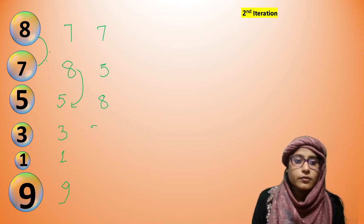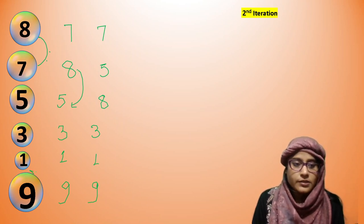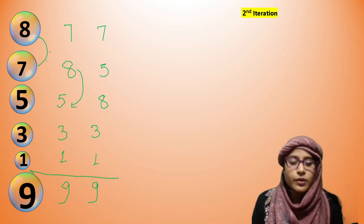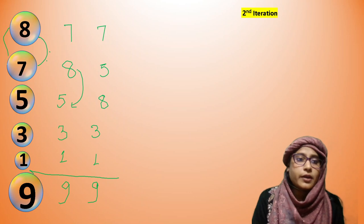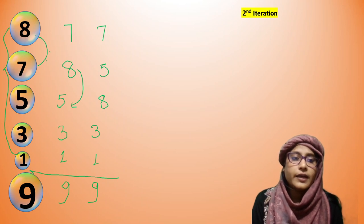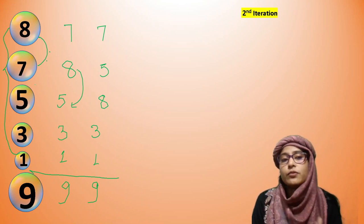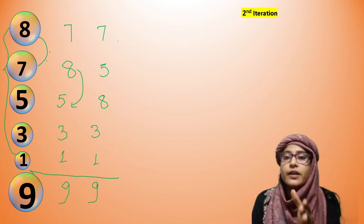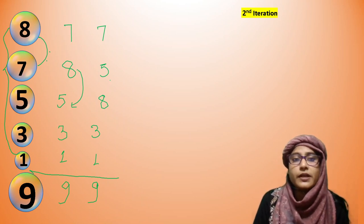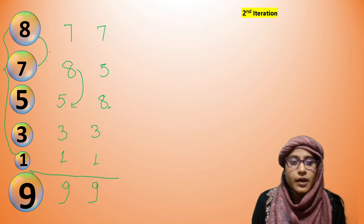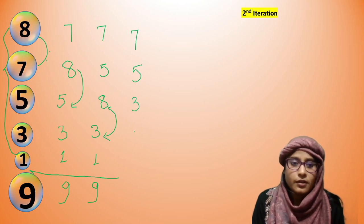Here is 8, and 3, 1, and 9. Look at 9 — the last element is already sorted, so we don't need to compare it. We only compare 5 elements out of 6. Check 8 greater than 3? Yes — swap. Now 7, 5, 3, 8, 1, 9. Again check 8 greater than 1? Yes — swap. 1 shifts, and 8 is placed here, then 9.